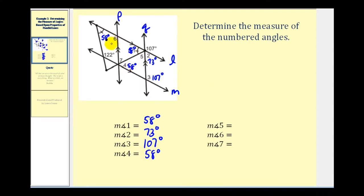Now let's take a look at angle six. Angle six and the angle that measures 107 degrees are alternate exterior angles, where P and Q are the parallel lines and line L is the transversal. So these two angles are congruent and therefore the measure of angle six is 107 degrees.